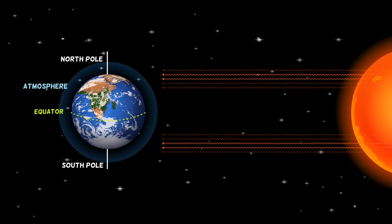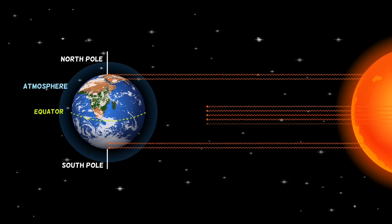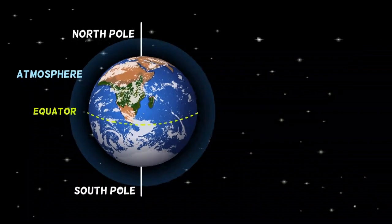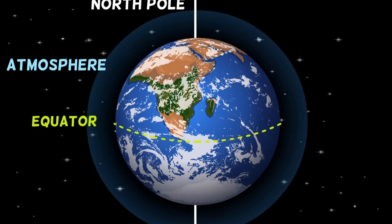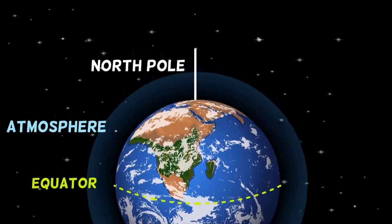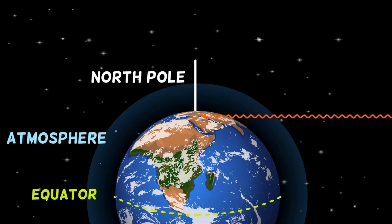Because of the curvature of the Earth, the Sun's energy hits the equator more directly than it does at the poles. At the equator, the energy is more intense and concentrated. At the North and South poles, the Sun's rays are spread out over a much greater area. Therefore, the energy is less intense. That's why the equator is much warmer than the icy poles.